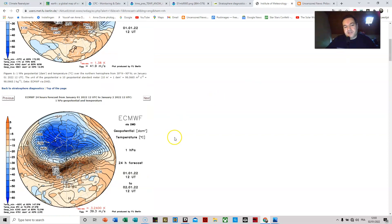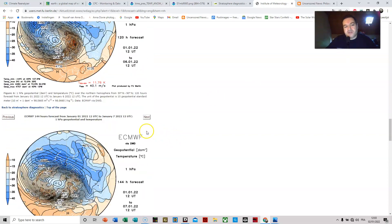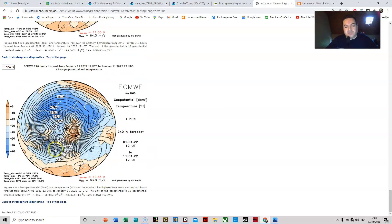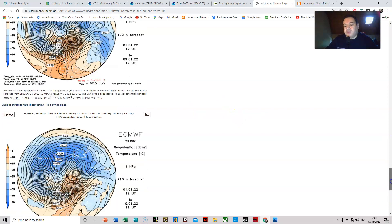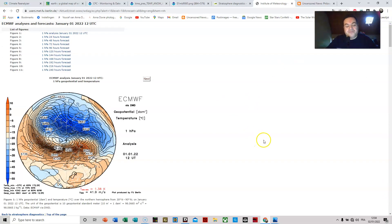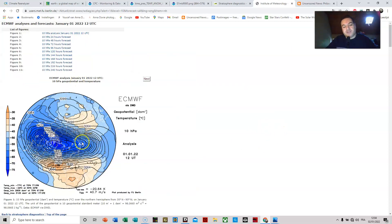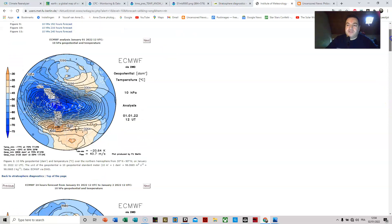We can see that no major warming is actually forecasted. In fact, if anything else, the polar vortex will remain quite normal according at least to the forecast. And if I look at the 10 millibar I can see the same trend.